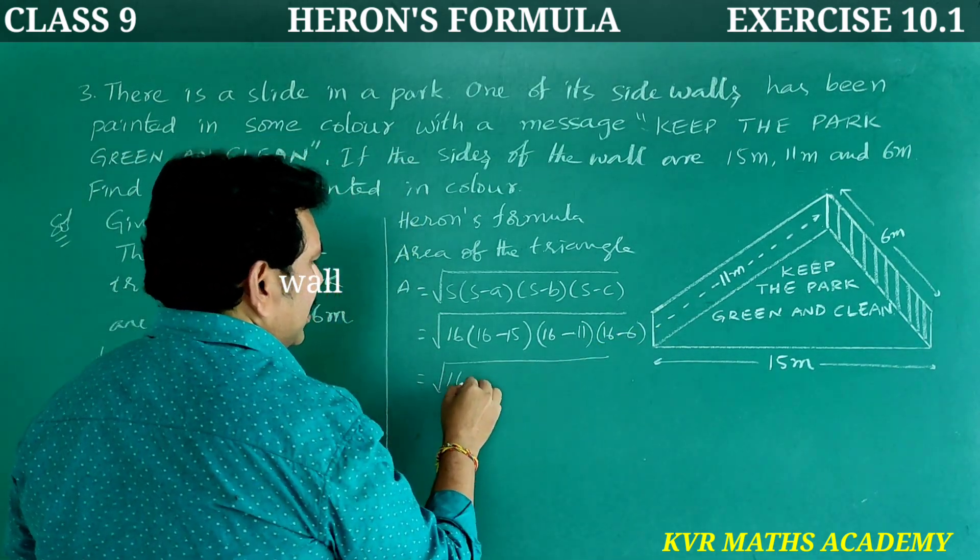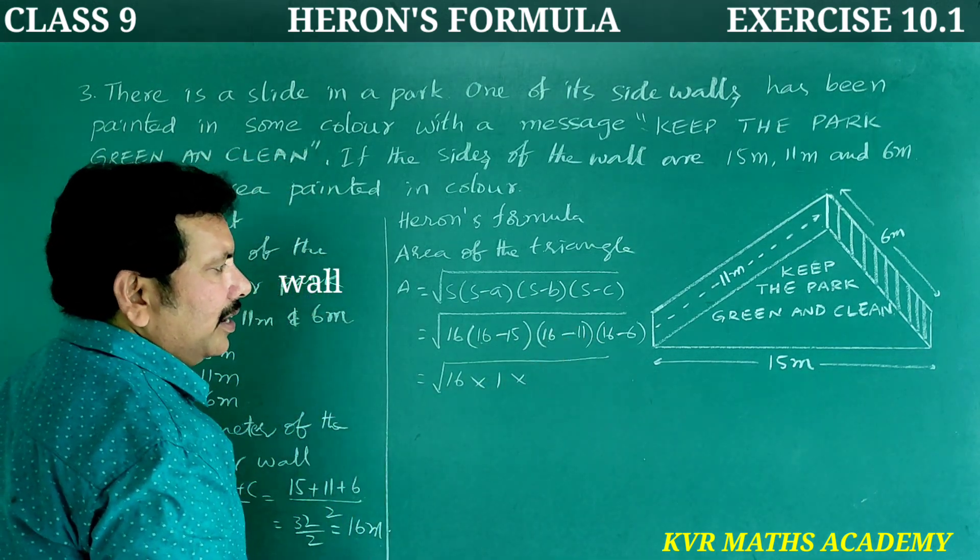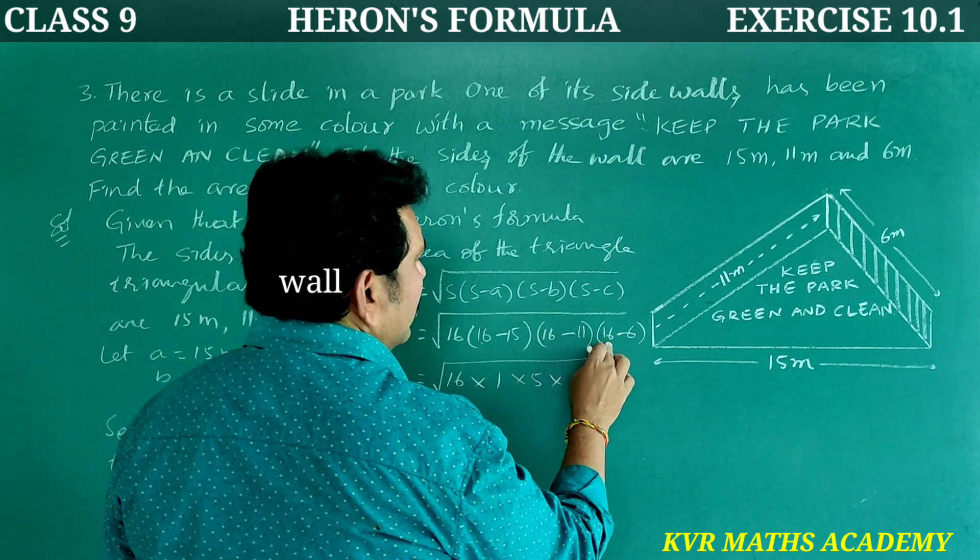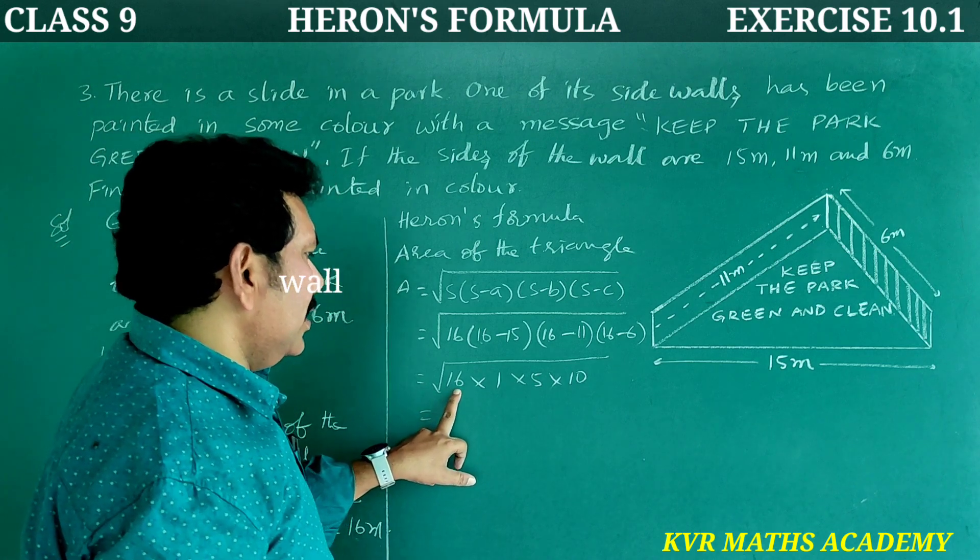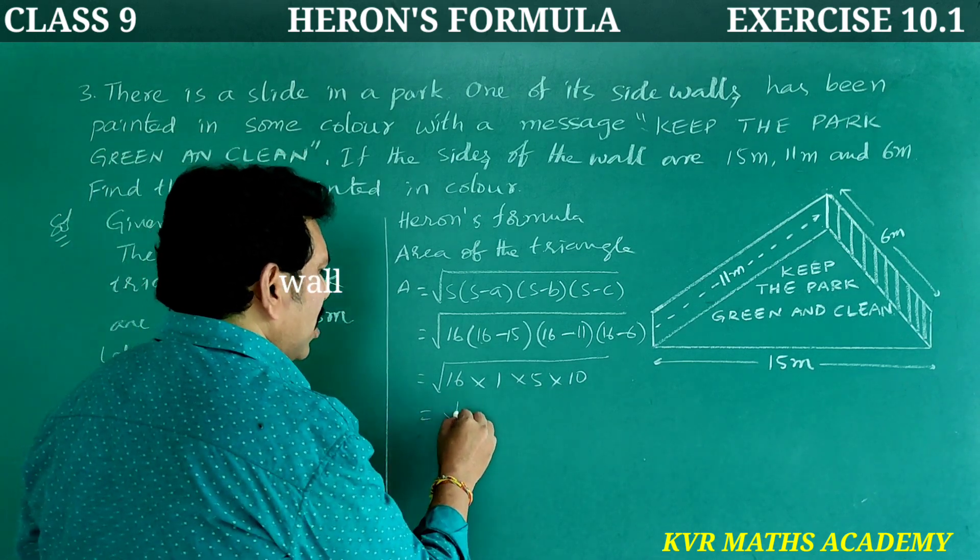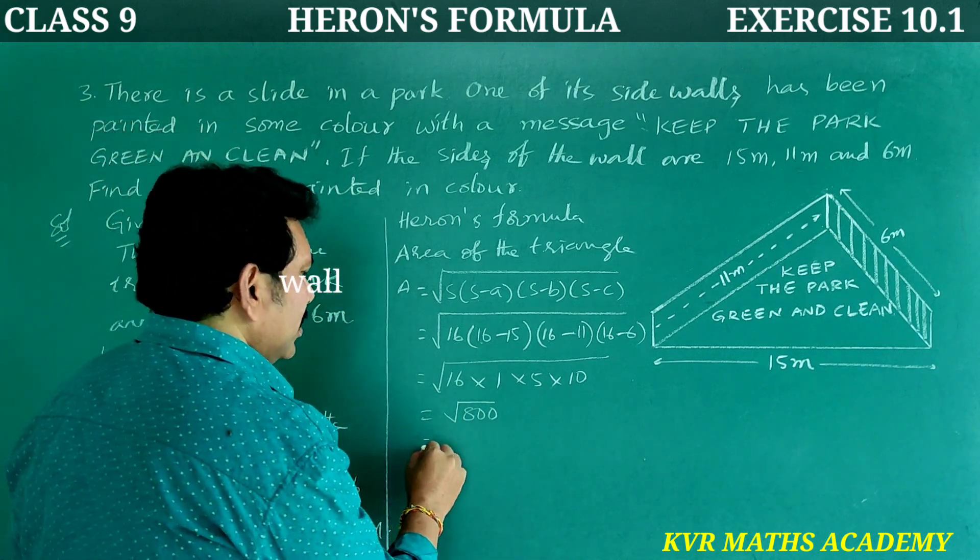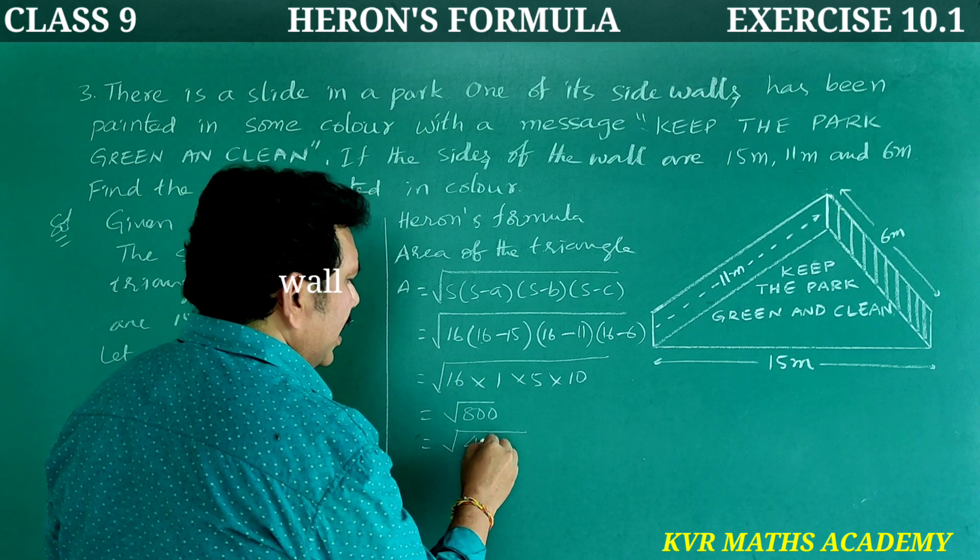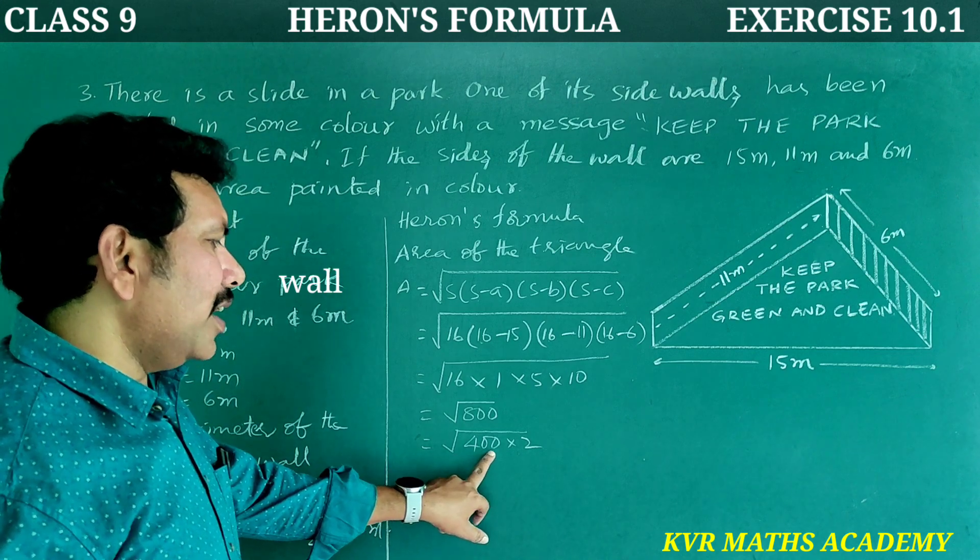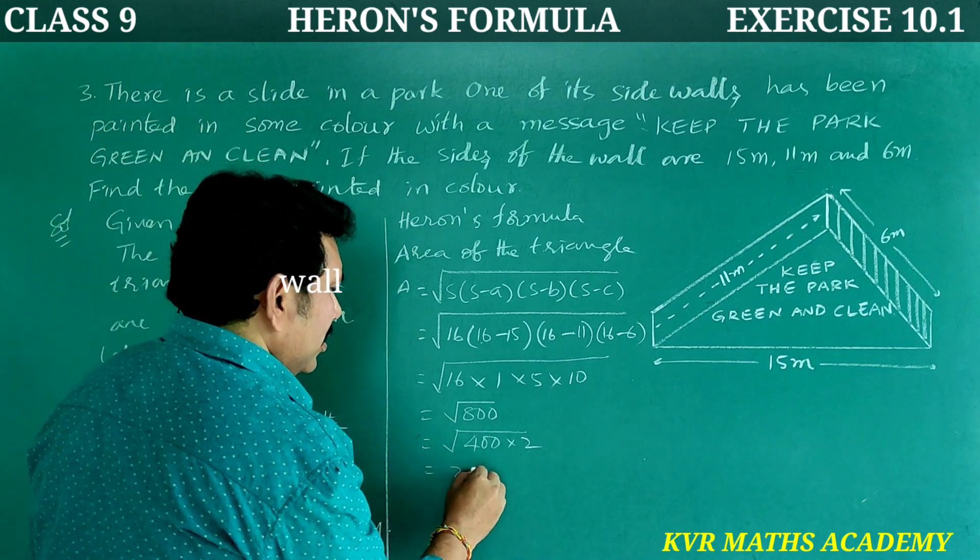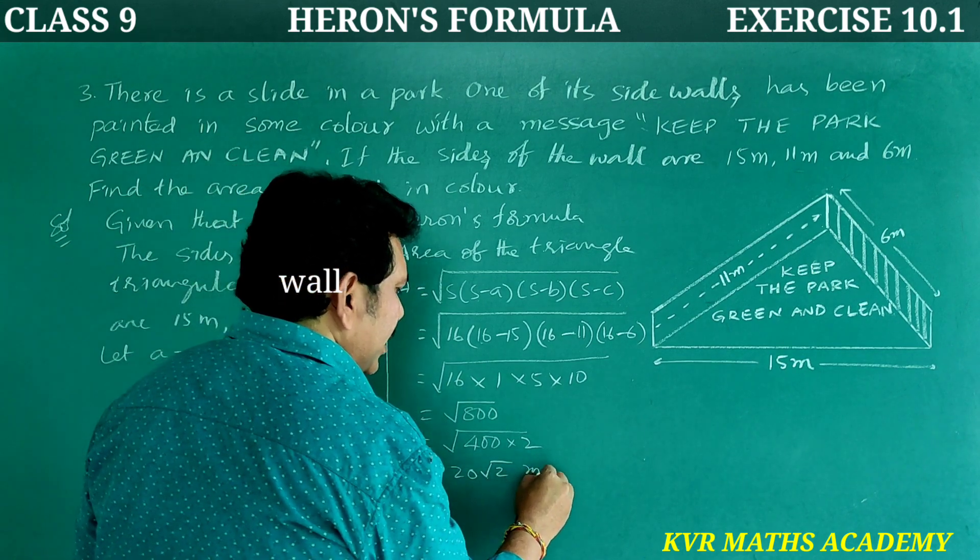That is equal to root of 16 into 1 into 5 into 10. That is equal to 16, 16 into 5 is 80. 80 into 10 is root of 800. Root of 400 into 2. Root of 400 is 20. 20 root 2 meter square.